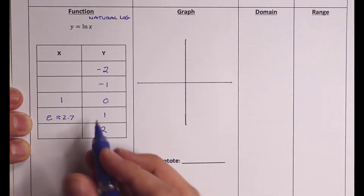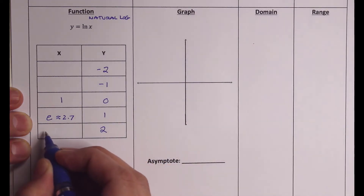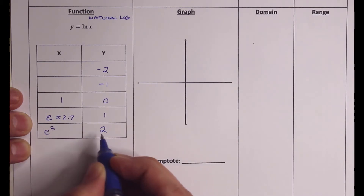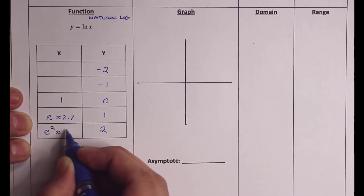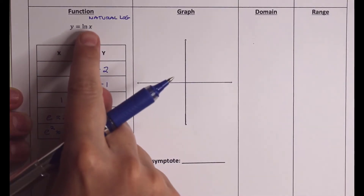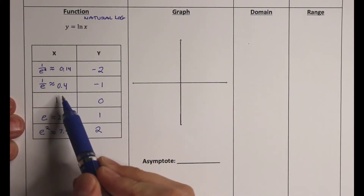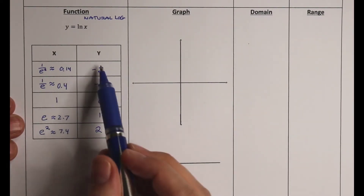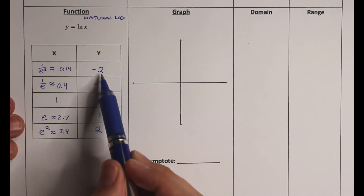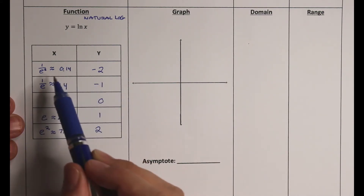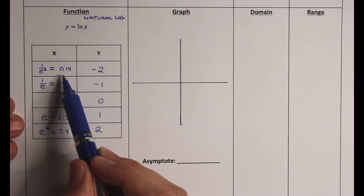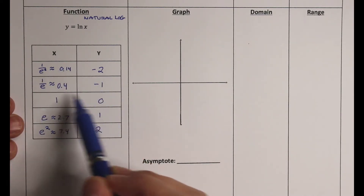And that continues all the way down the table. E squared is what we got when we plugged in 2, which was about 7.4. I'll fill in the rest of the table with just the opposite of what we got before. We had plugged in negative 2 originally and got out about 0.14, so now we plug in 0.14 and get out negative 2, and so on.